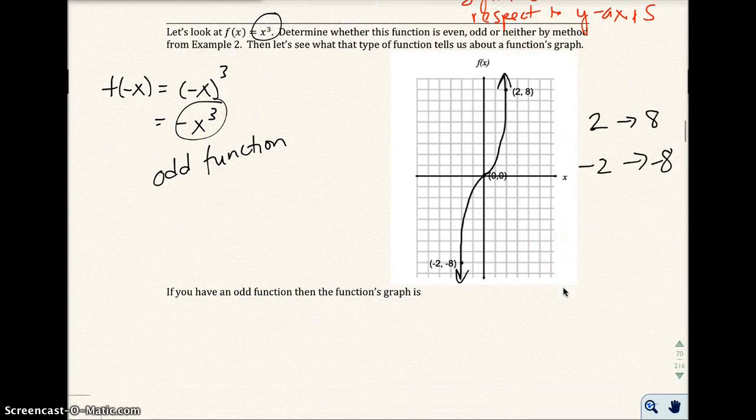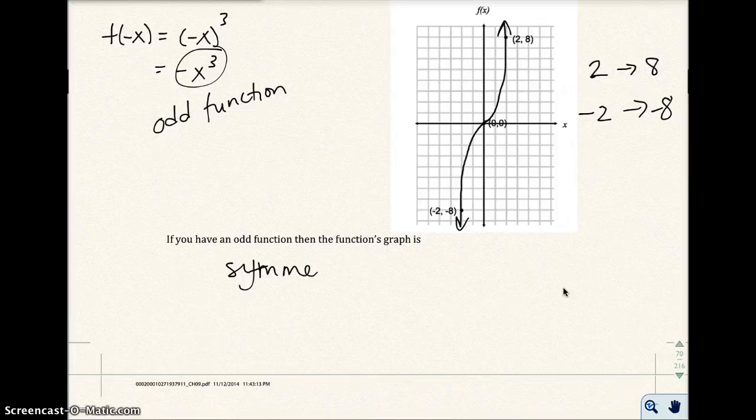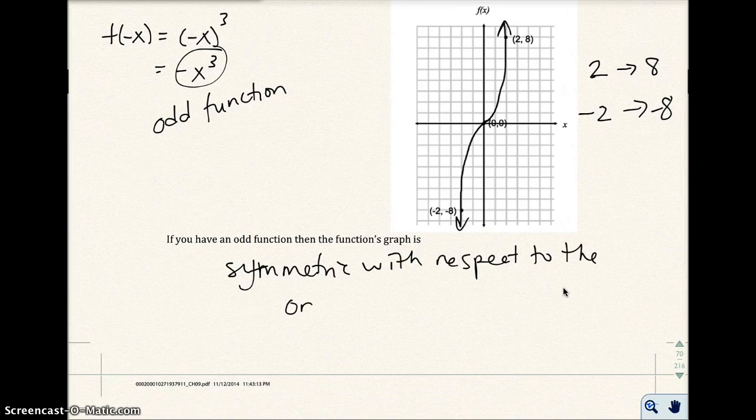So if you have an odd function, the function graph is symmetric with respect to the origin. That means I look at this and the origin is right here. Symmetric means it's a mirror across the origin, and the reflection would be at the other point right there.